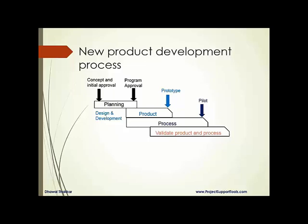Once your pilot lot is completed, you again have to validate whether you are capable of making mass-scale productions — whether your product can be manufactured to the required quantities, required time, required quality, and required cost. So the next phase is to validate product and process, and then you launch your product.